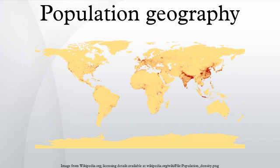Population geography is a division of human geography. It is the study of the ways in which spatial variations in the distribution, composition, migration, and growth of populations are related to the nature of places. Population geography involves demography in a geographical perspective. It focuses on the characteristics of population distributions that change in a spatial context.